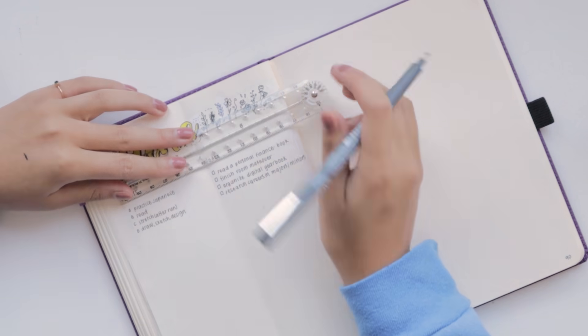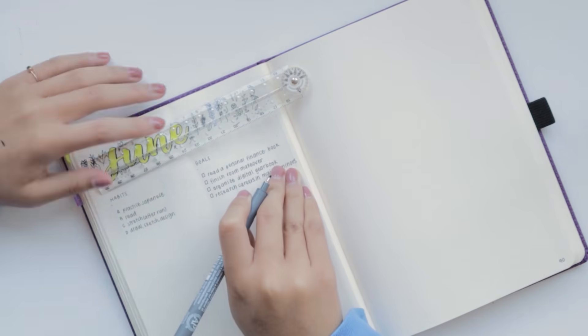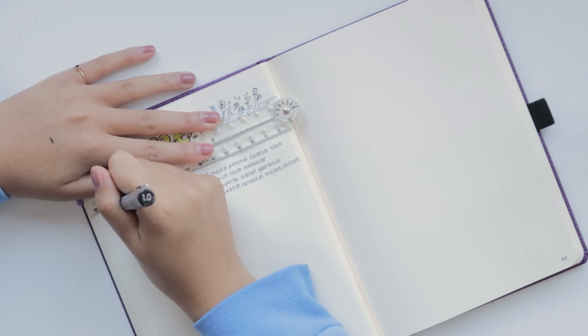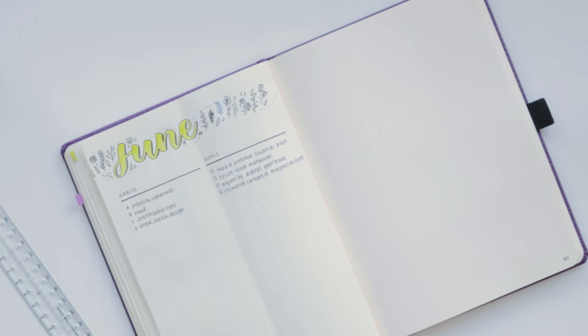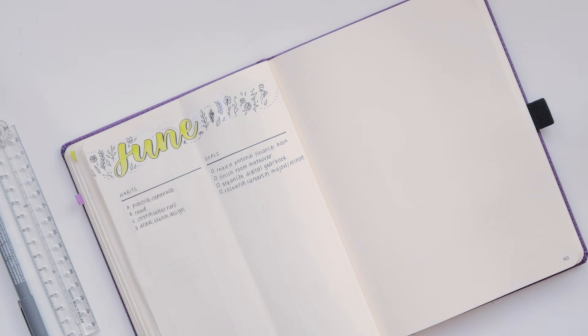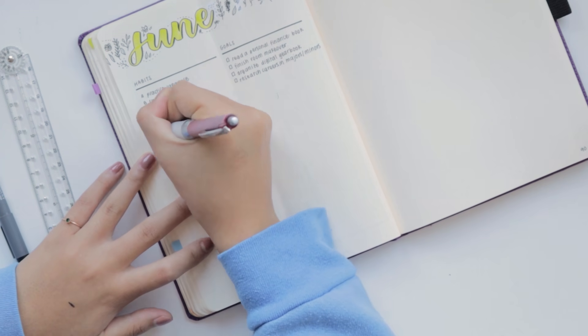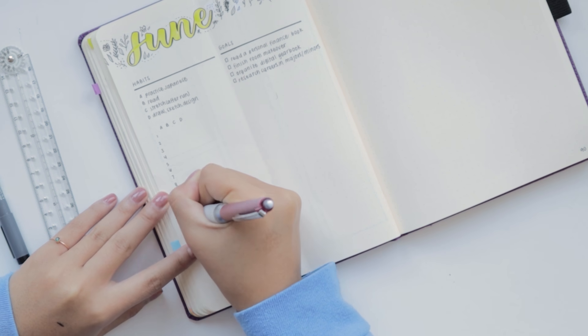Next to those habits, I've also set up my goals. Just like for the previous month, these goals are all smaller, broken-down versions of the goals that I'm working on for the entire year, along with a few smaller ones that are just based on things that are happening in this month, like my graduation from high school.